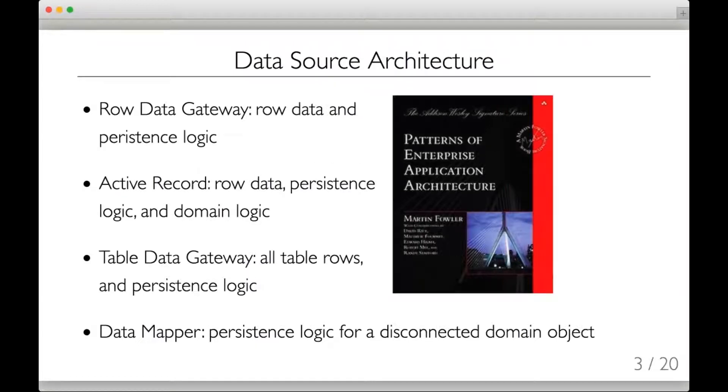Over decades of programming, developers have applied different data source architecture patterns to deal with moving information between objects in the database. Here are four of them categorized and named by Martin Fowler in Patterns of Enterprise Application Architecture. The first is Row Data Gateway, which encapsulates the data from a single table row along with the persistence mechanism to retrieve that row from the database and save it back.